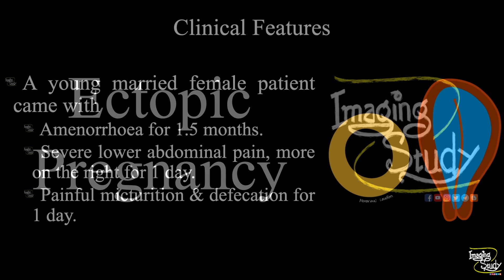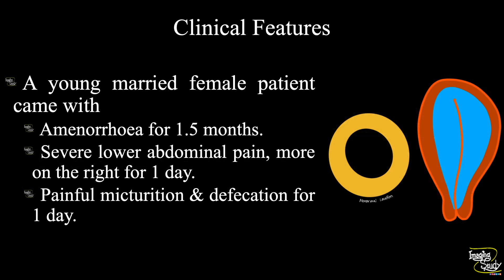Hi everyone, welcome to Imaging Study. Today we are going to see a case of ectopic pregnancy. A young married female patient came with amenorrhea for one and a half months. She complained of severe lower abdominal pain, more on the right, for one day. She also complained of painful urination and defecation for the same duration.